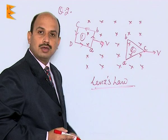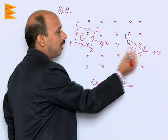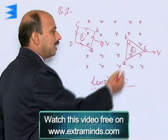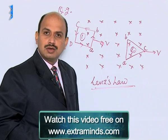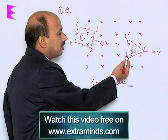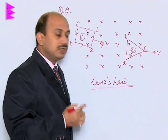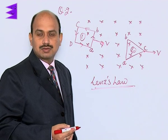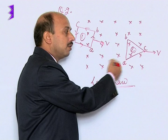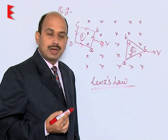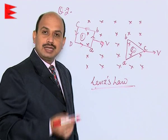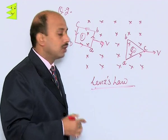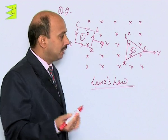Similarly, we can consider the case when this loop is coming out of the magnetic field — there is a decrease in magnetic flux. When the magnetic flux is decreasing, the current will be induced in such a way which will oppose the decrease in magnetic flux. This means that because of the movement of the loop out of the magnetic field, a magnetic field will be produced which tries to increase the magnetic flux or maintain the net magnetic field.